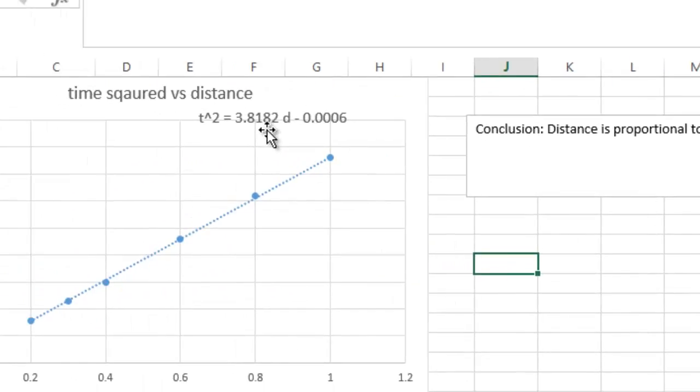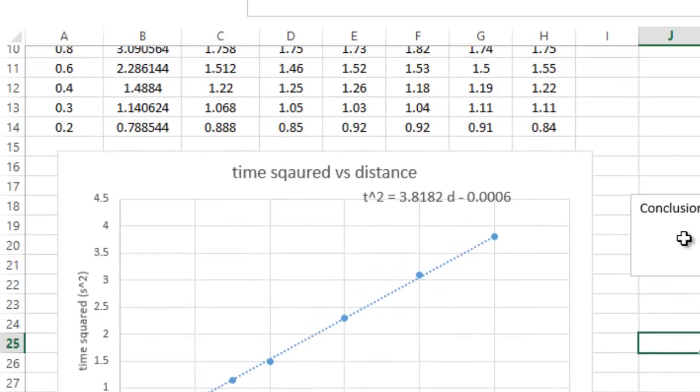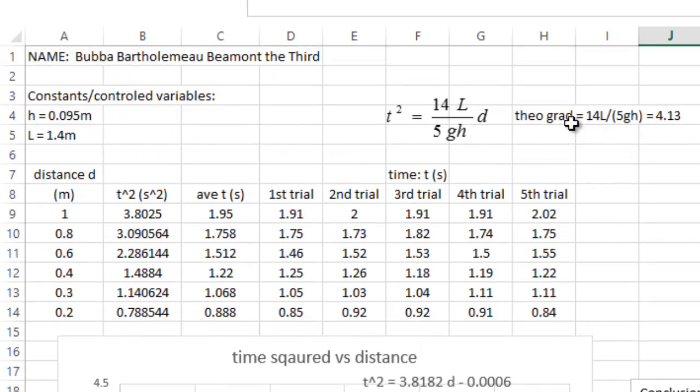We do have the formula on the graph. That's for merit. One of the excellence bits is comparing our expected gradient of 4.13 to our experimental gradient of 3.18. And with a good reason why you think that's not the same is one of the easiest excellence points in your discussion.